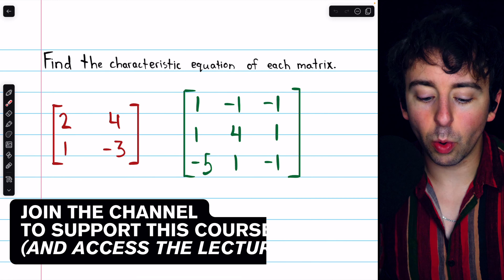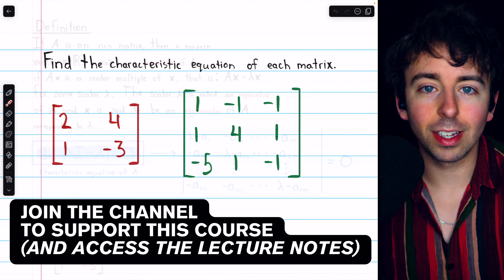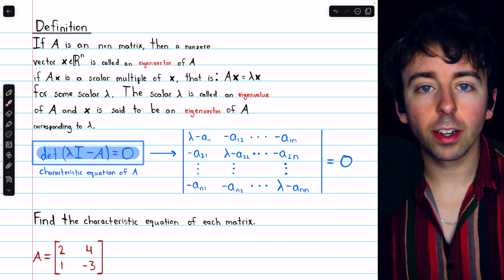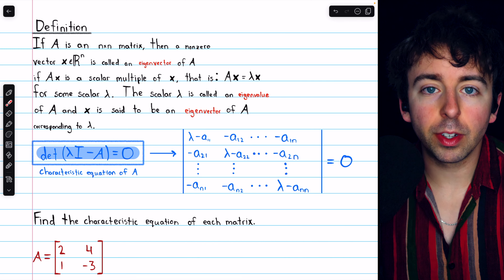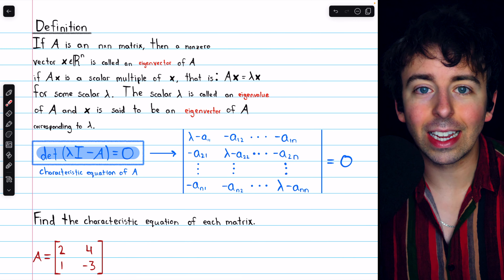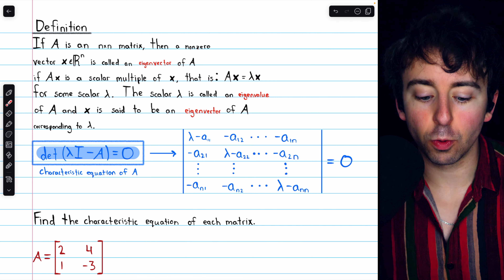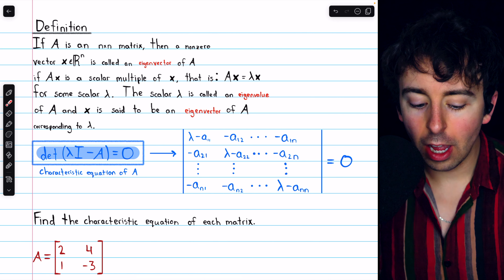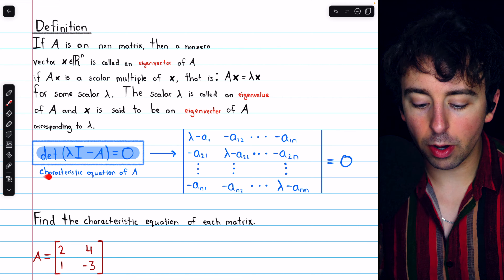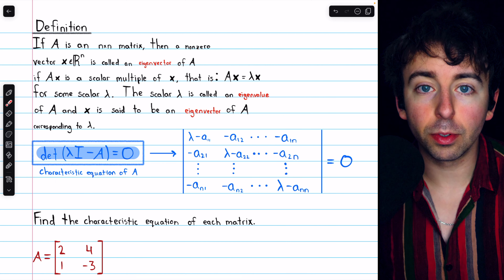Let's find the characteristic equations of these two matrices. Recall that the characteristic equation comes from the definition of eigenvalues and eigenvectors. I'll leave a link in the description to my lesson introducing those, but here's a quick recap of the definition and where the characteristic equation comes from.